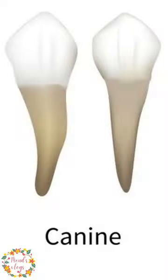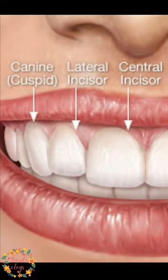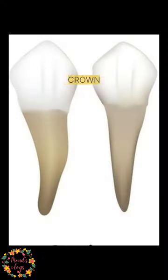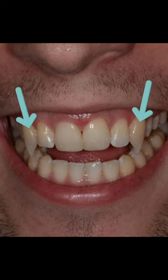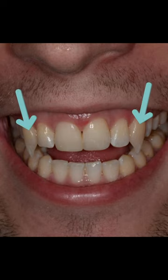Let's talk about the canine tooth. The canine is the third tooth in the oral cavity, adjacent to the lateral incisor. The canine has a crown and a single root — the crown is in the oral cavity and the root is in the bone. The canine has a cusp which is very sharp.